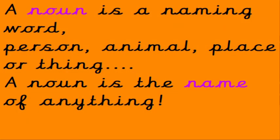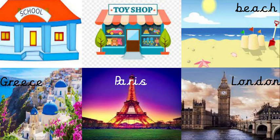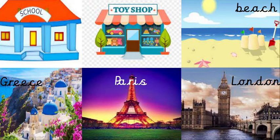A noun is a naming word — person, animal, place or thing. A noun is the name of anything. So we're going to places now — places that you can go to, visit or travel to. Some places don't need a capital letter, like school, toy shop and beach. In the bottom row I've chosen the names of places that are real, so they are proper nouns — real names, proper places. They need to start with a capital letter, just like your name. The real places I've chosen are Greece, Paris and London.